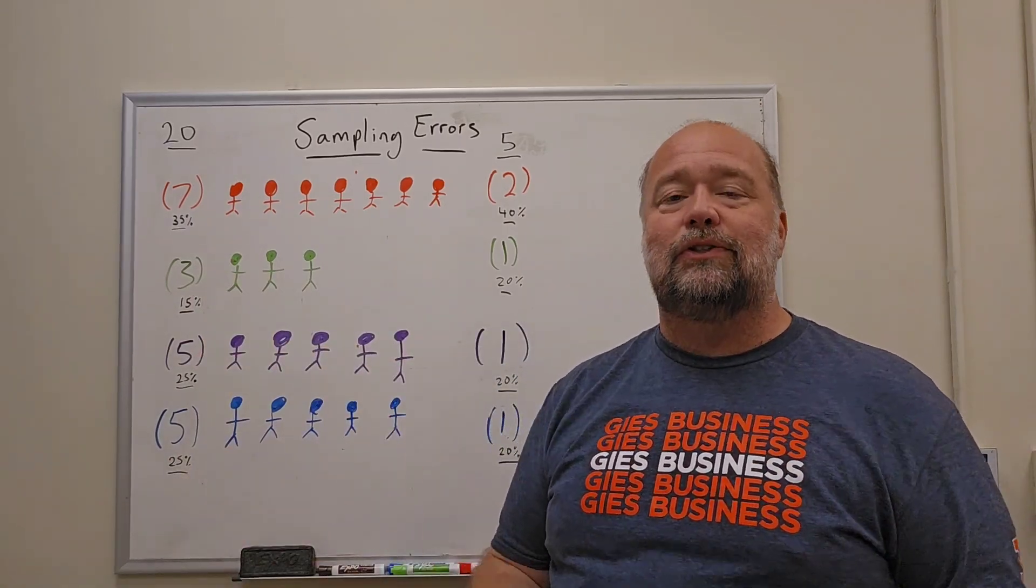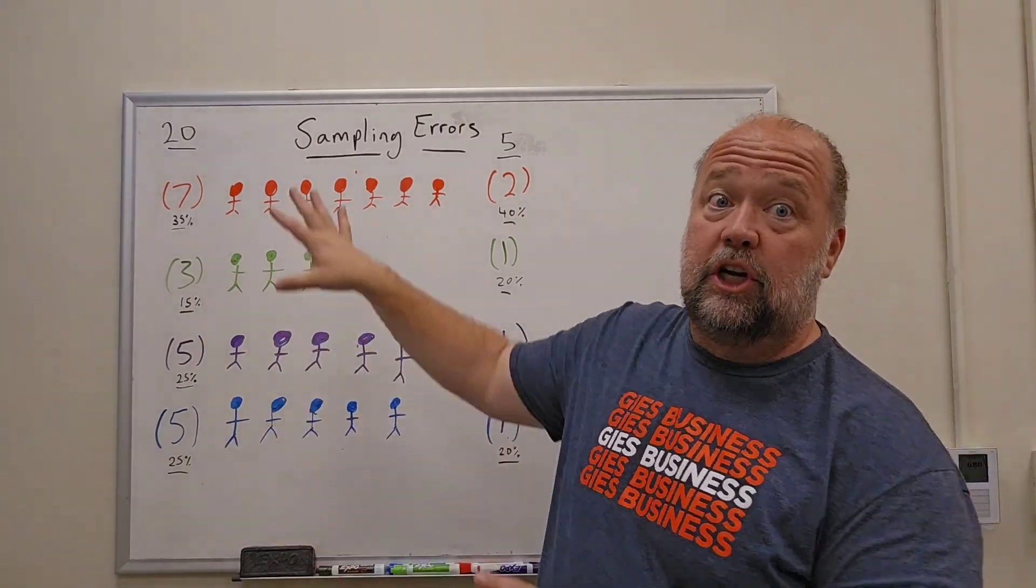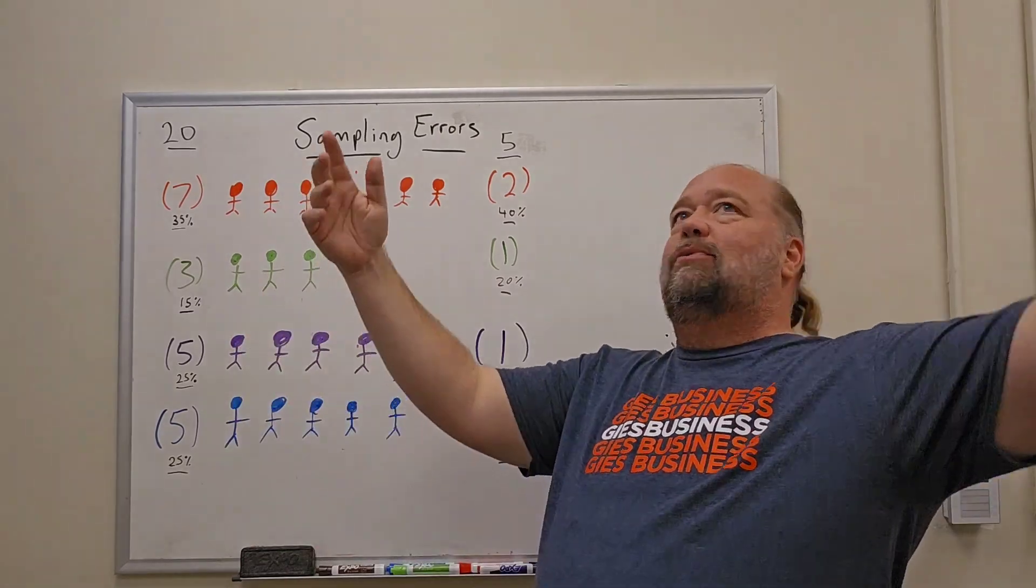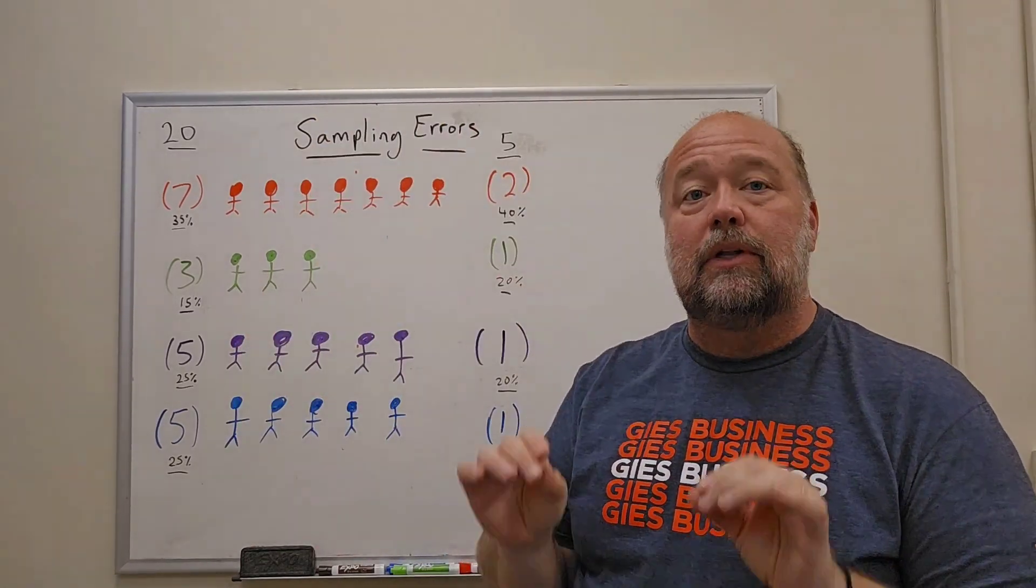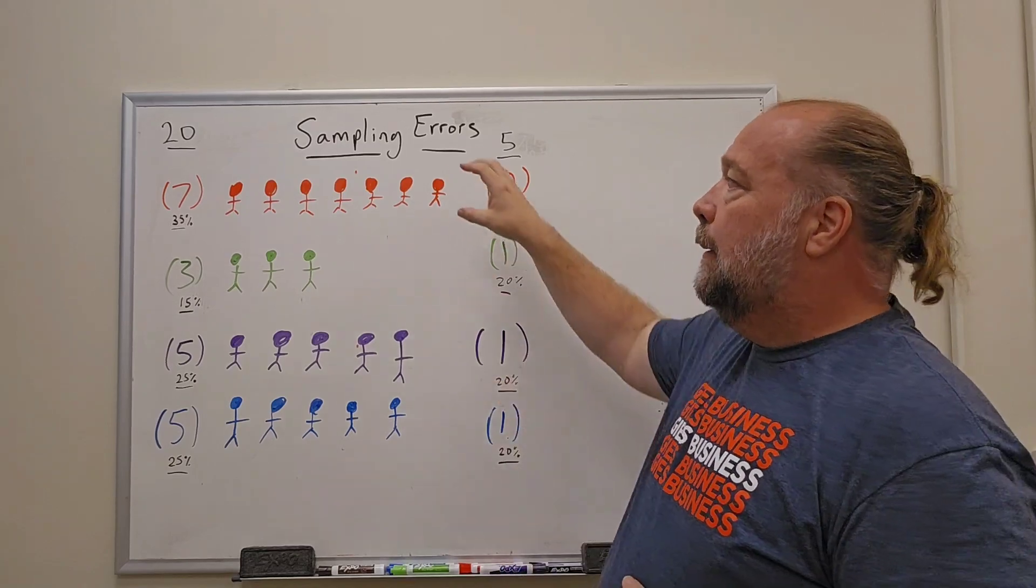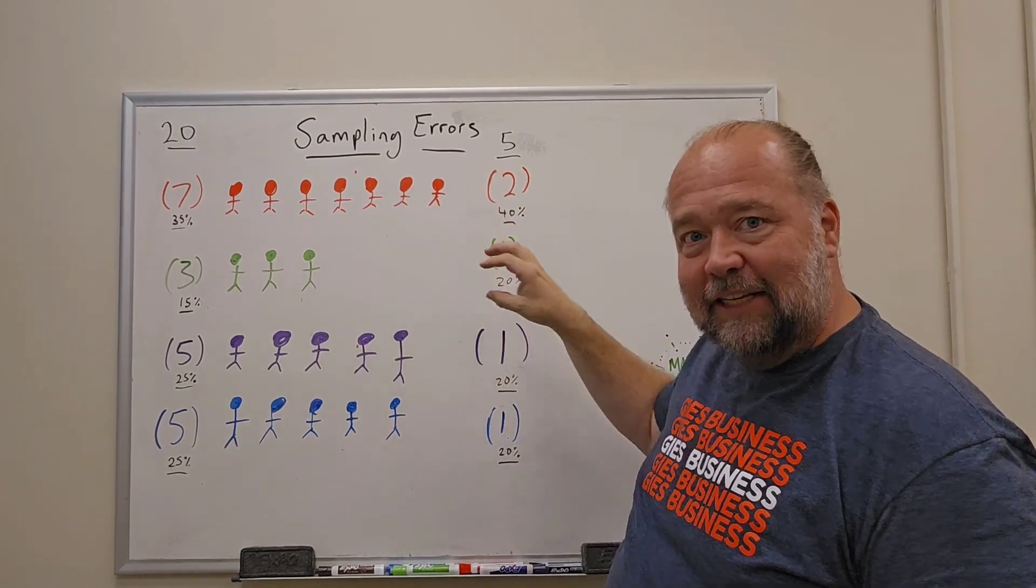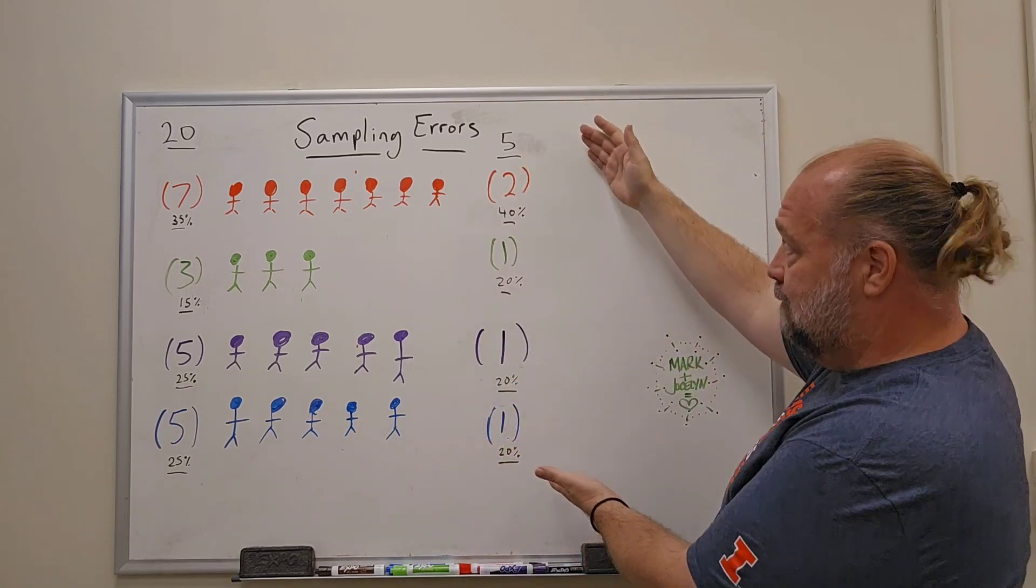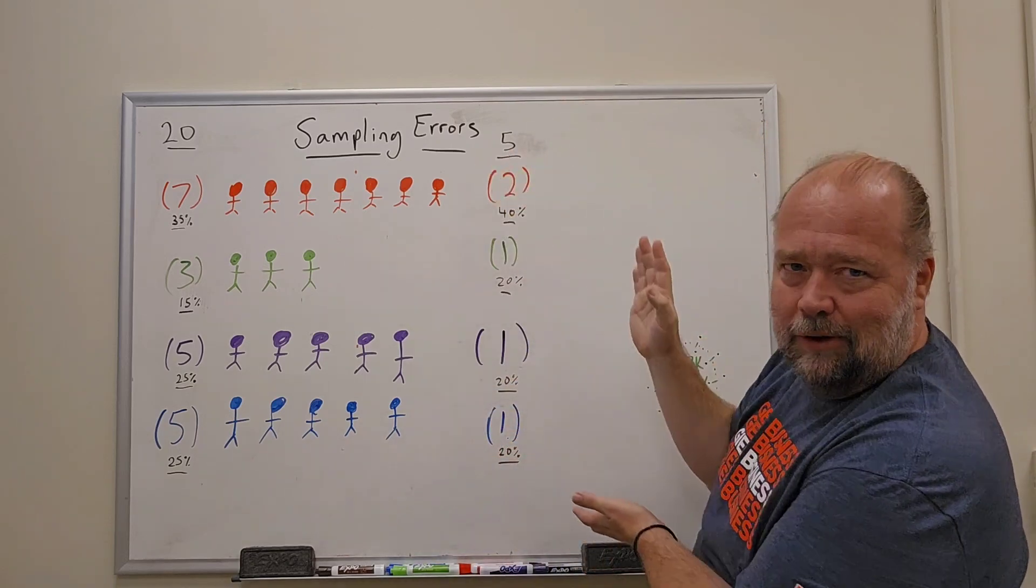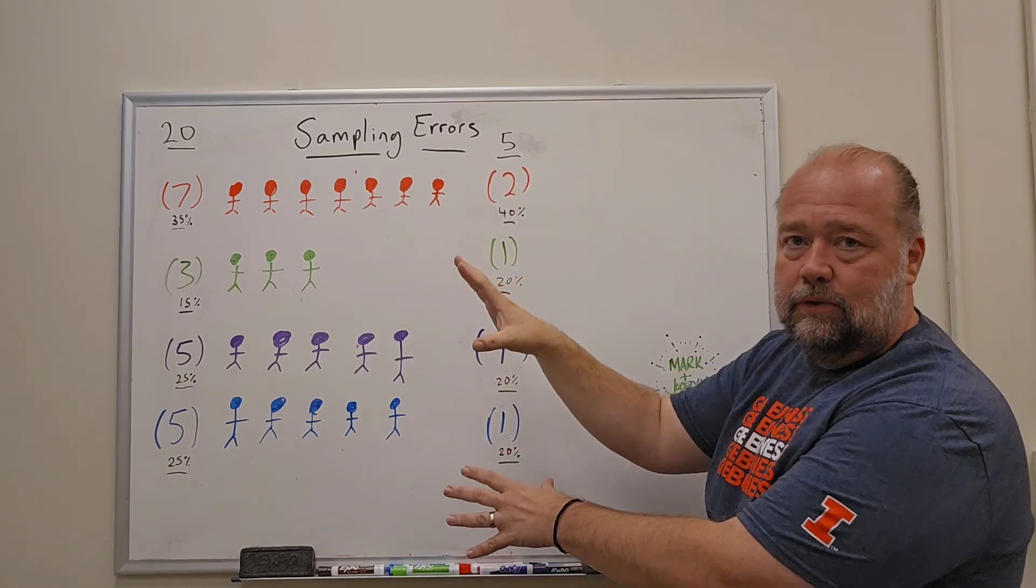However, election people, pollsters, they cannot ask everybody in the entire population. We can't ask all 130 million people or whatever. So what they do is they take a sample. We take a little piece of each one of these different groups that are here to come up with a sample that represents, to the best of our abilities, our population.